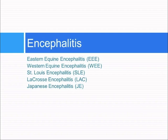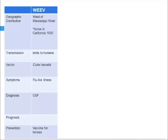The second-to-last group of diseases would be the encephalitides. First is Western equine encephalitis, found west of the Mississippi River. It was first discovered in 1930 in a horse in California. Transmission is from birds to humans, and it's the Culex mosquito involved in spreading. There is predominantly flu-like illness. There isn't a vaccine for humans, but there is a vaccine for horses.